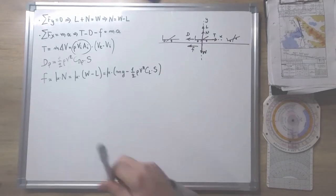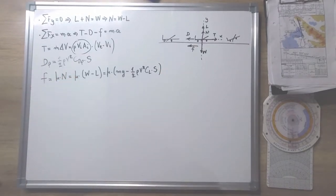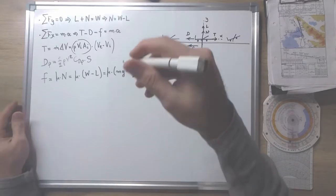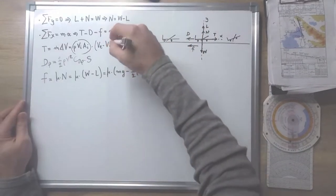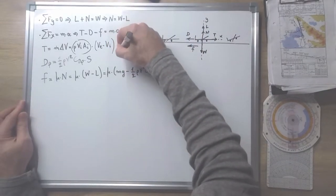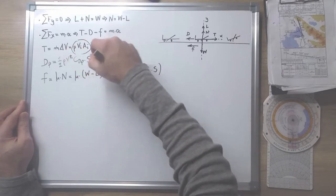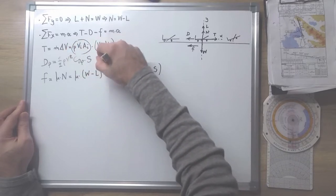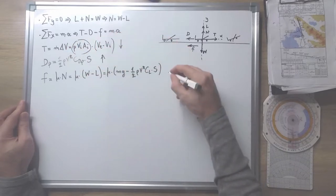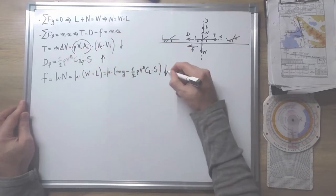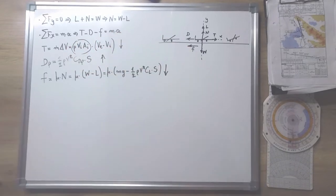So as we can see, the forces depend on the speed of the aircraft: thrust is decreasing, parasite drag is increasing, and friction is decreasing.